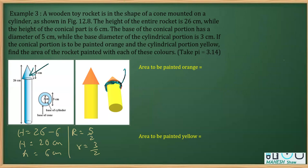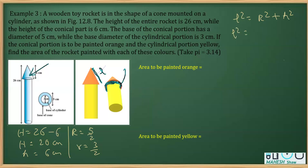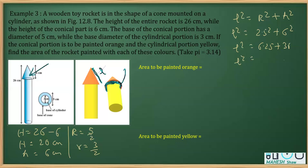To find the curved surface area, we need the slant height. Using the relation l² = R² + h², we calculate: l² = 2.5² + 6² = 6.25 + 36 = 42.25. Taking the square root, the slant height l = 6.5 cm.